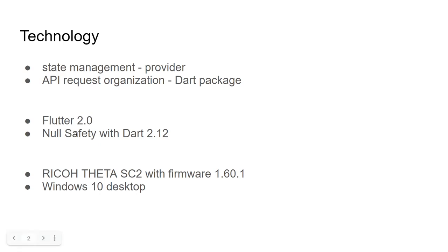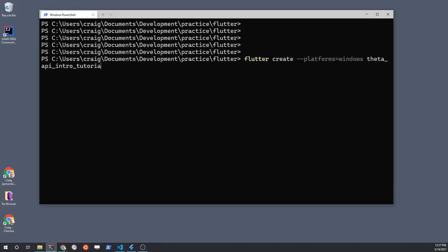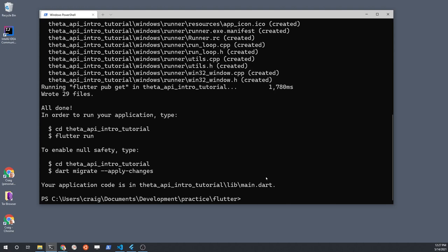Since this is a brand new app and just a demo, we're going to use Flutter 2.0. The primary trick with Flutter 2.0 is that text buttons and icon buttons have slightly different language for styling. We'll also add null safety support with the new Dart 2.12. We're going to target the RICOH THETA SC2 — it's cheaper than the Z1. The newest firmware as of today is 1.60.1. I'm going to build it on Windows desktop, although it should also build on Android and iOS.